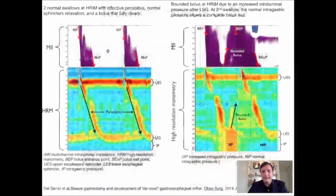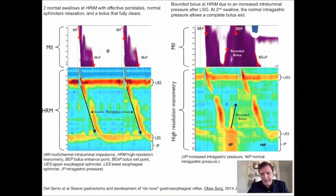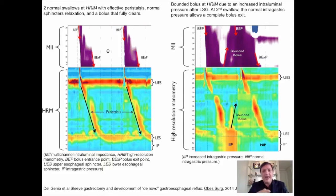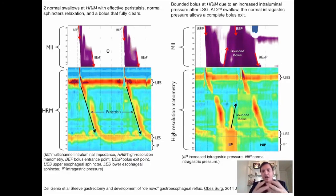One of the most robust explanations we have is that after we change a stomach in a sleeve gastrectomy, what we had before in the stomach is a high compliance, low pressure system. By the laws of physics, when you change this into a tube shape, you're going to significantly increase the pressure.